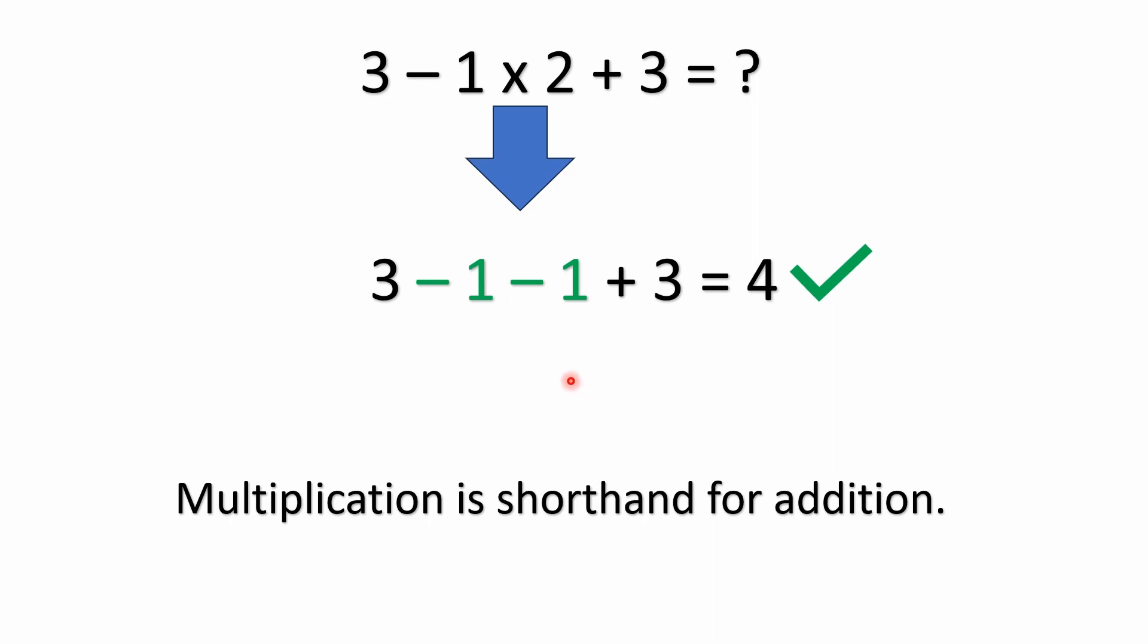Just recall that multiplication is just shorthand for addition. So another way you could have looked at this is saying you've got 1 times 2 or 2 1s, right? 1 times 2 is the same as 2 times 1. It's the same as adding 2 1s.